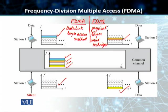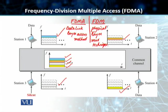In FDM, different low-bandwidth channels at the physical layer are combined together and multiplexed because we need to transmit them using a high-bandwidth channel. FDMA, on the other hand, is an access method in the data link layer. The data link layer tells each station's physical layer to make a band pass channel from the data passed on to it. So it is essentially different from Frequency Division Multiplexing.